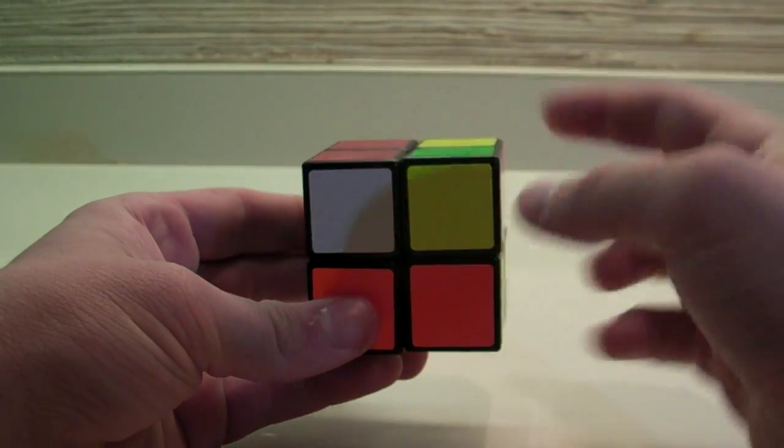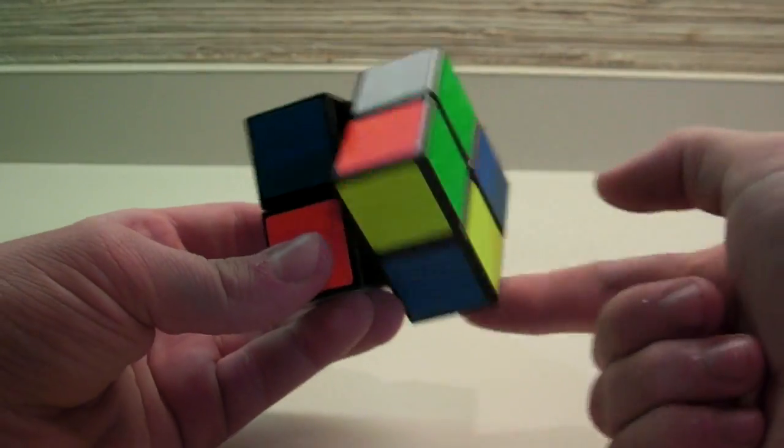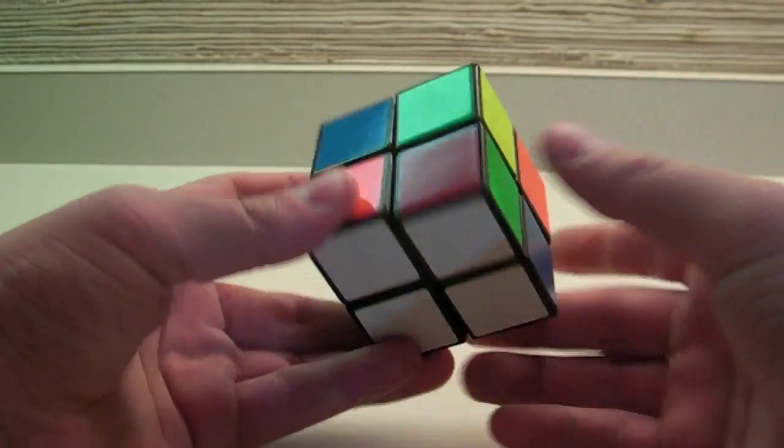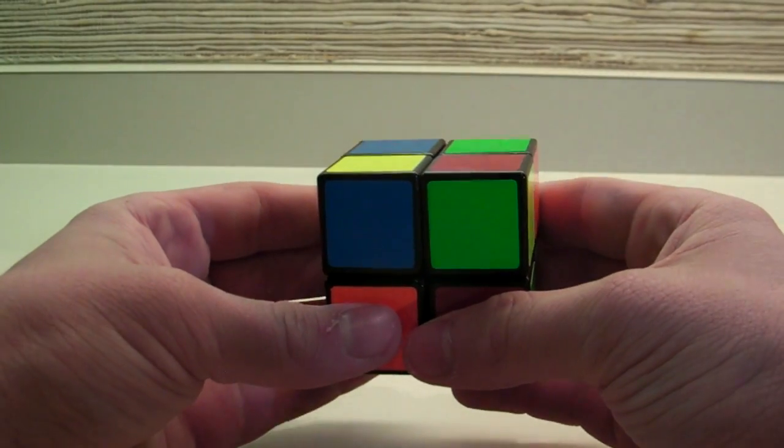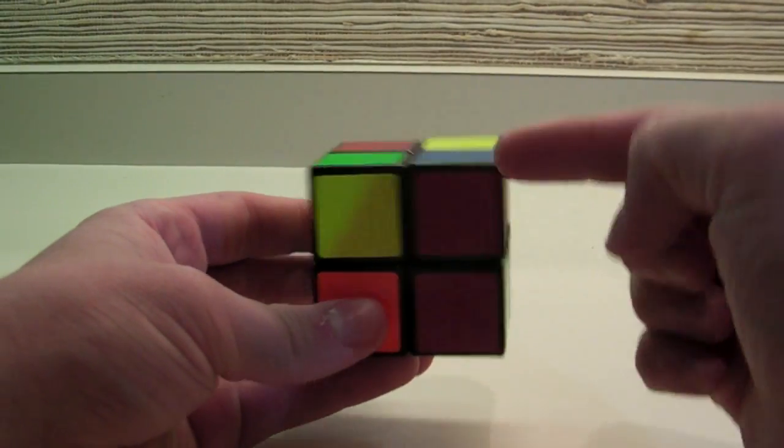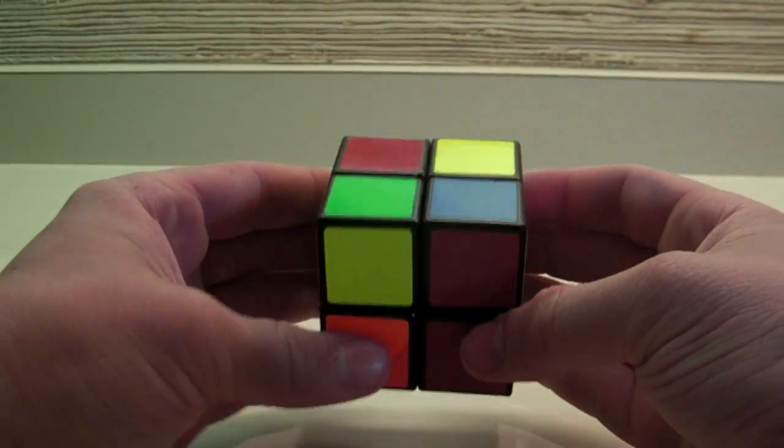So, put white on the bottom here, like this, and then take this corner and put it down here. Then, you analyze the top. I have the anti-sune case, and I will do the algorithm for that.